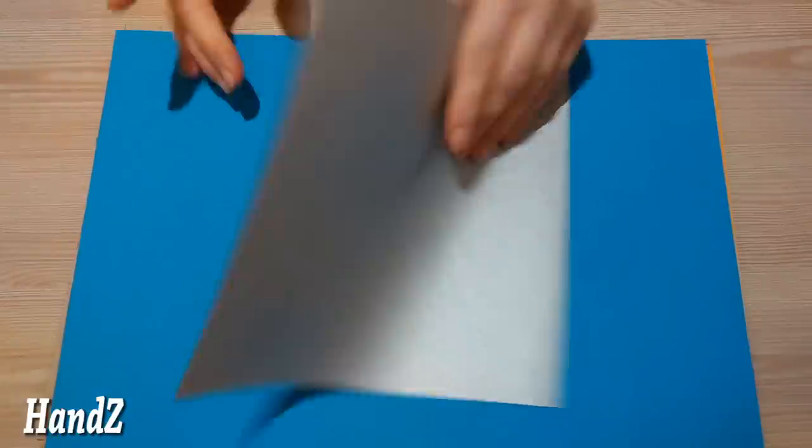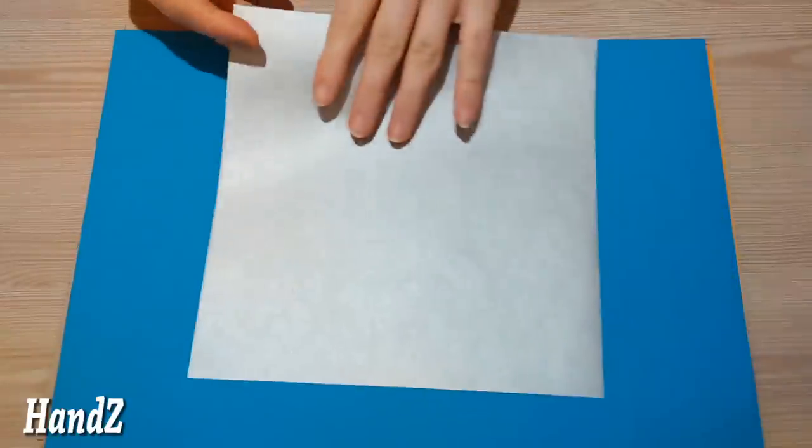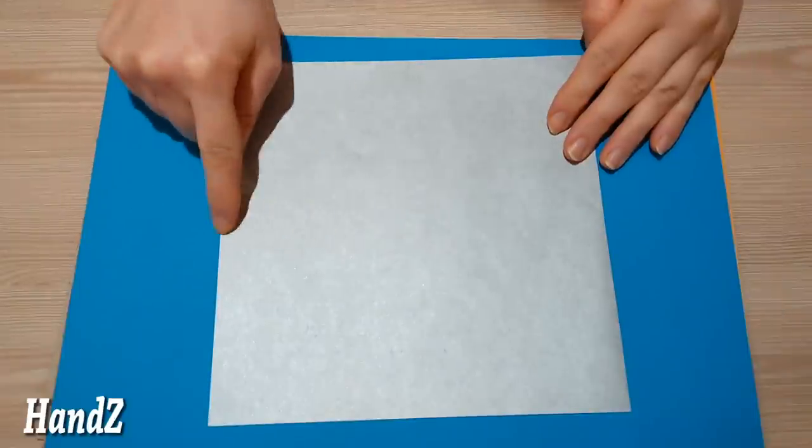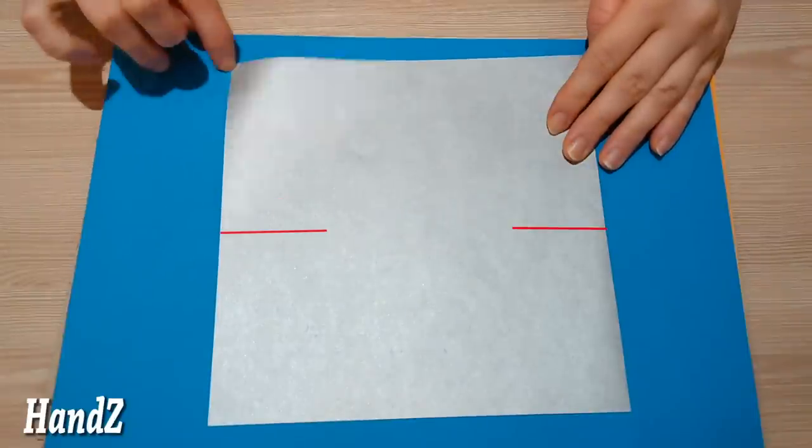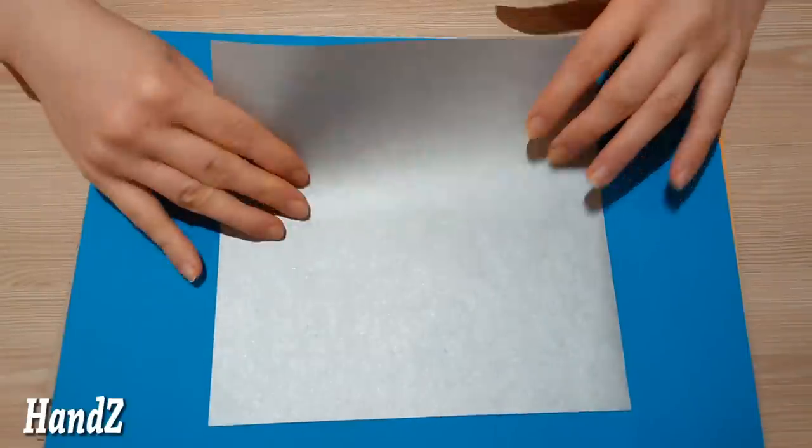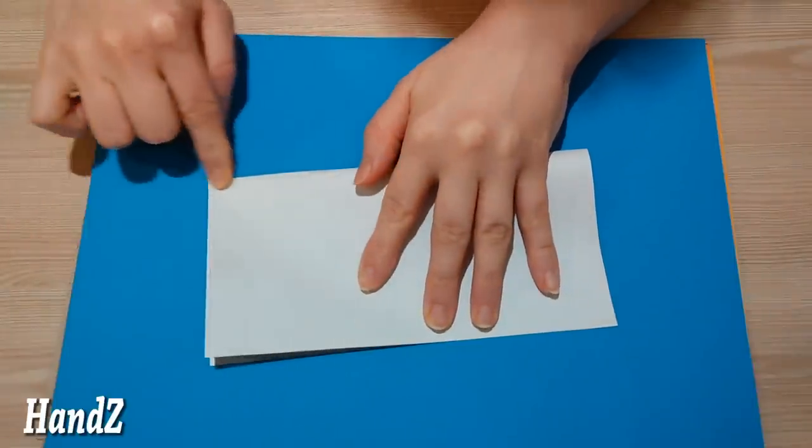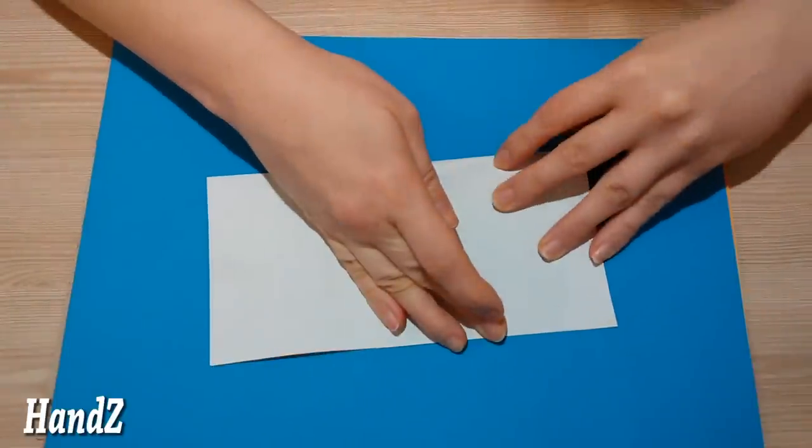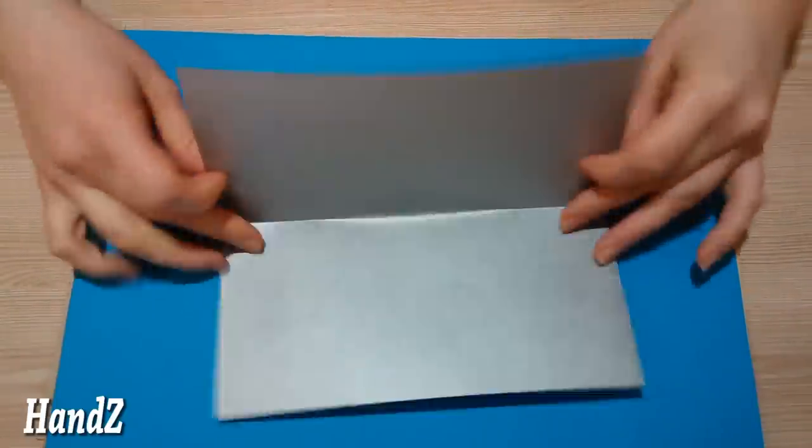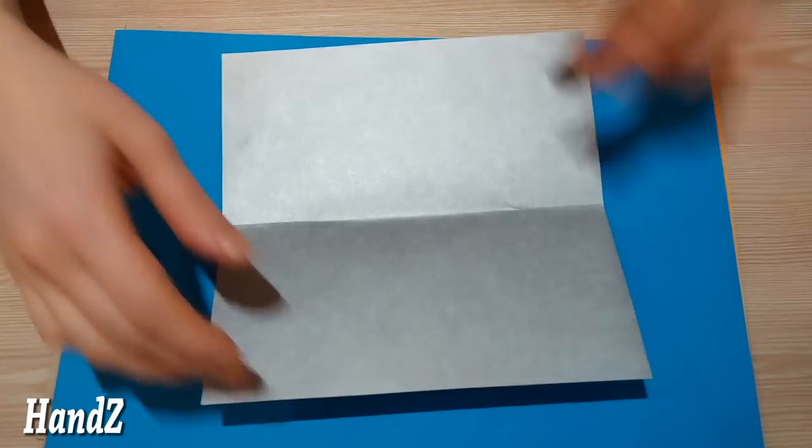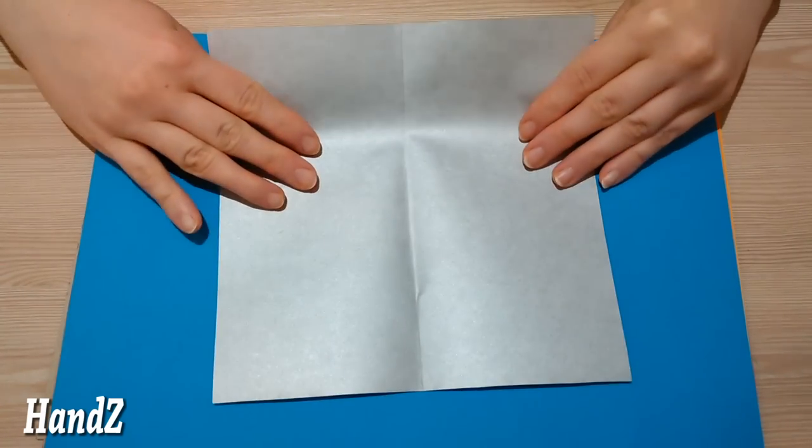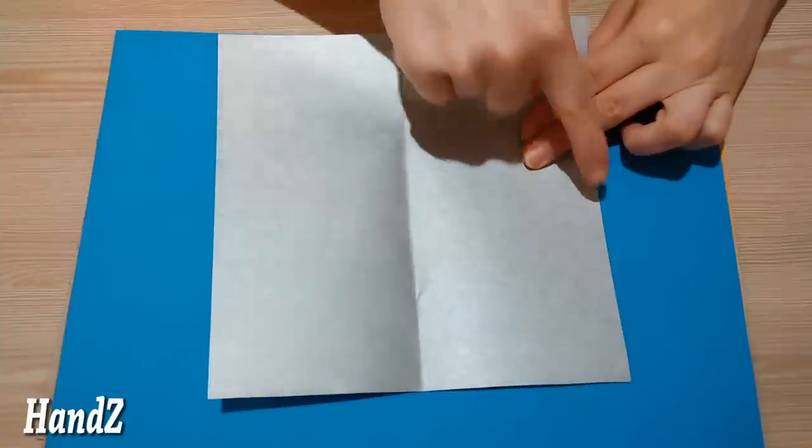Start with a square piece of paper colored side up. First, fold paper in half and make two short creases. Open it. Then fold in half the other way and make two short creases.